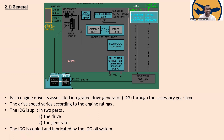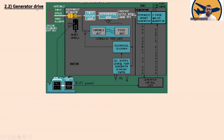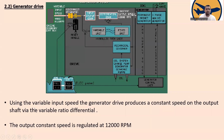Each engine drives its associated Integrated Drive Generator through the engine accessory gearbox. The drive speed varies according to the engine rating. Using the variable input speed, the generator drive produces a constant speed on the output shaft via the variable ratio differential. The output constant speed is regulated at 12,000 RPM. This is the differential and input step-up gear.